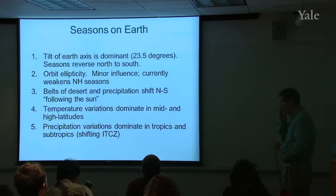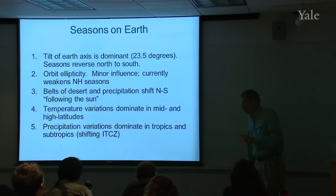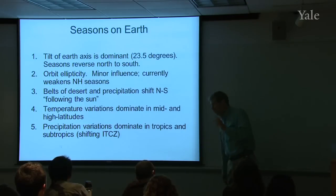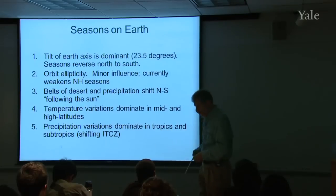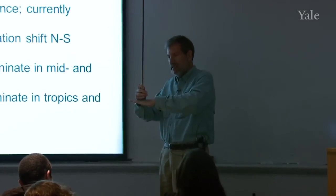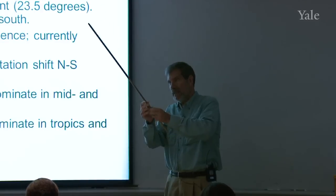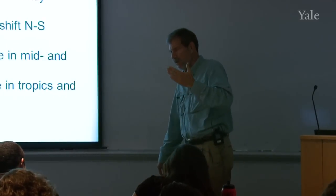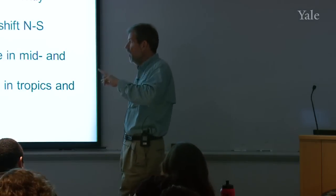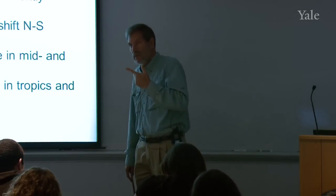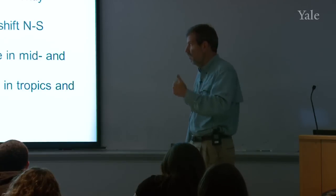What causes the seasons on Earth is the tilt of the Earth's axis — currently 23.5 degrees, measured from the plane of the ecliptic, which is the plane in which the Earth moves in its orbit. Because it's a tilt effect, during part of the year the Northern Hemisphere is tilted toward the Sun and part of the year tilted away. So the seasons are opposite in the two hemispheres: when it's winter in the North, it's summer in the South, and vice versa.